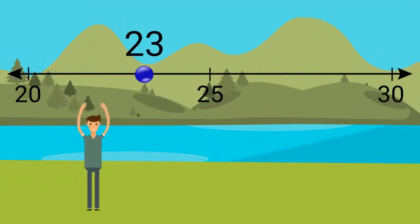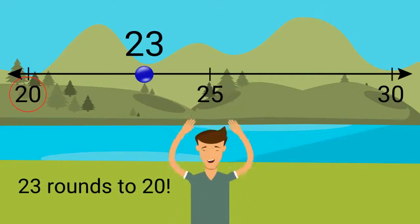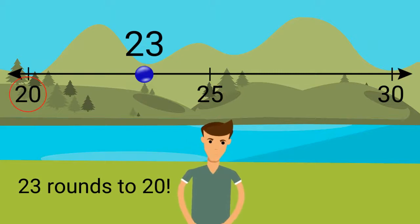Look at this number line. Find the number 23. Which 10 is 23 closest to? 20 or 30? 23 rounded to the nearest 10 is 20. 23 is closer to 20 than to 30.